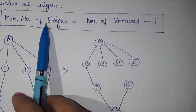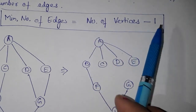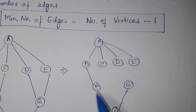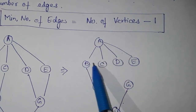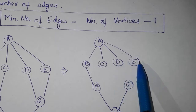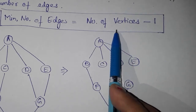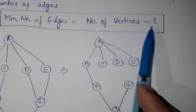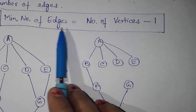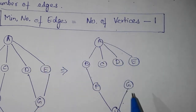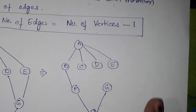The minimum number of edges equals the number of vertices minus 1. Here the total number of vertices are 8, so 8 minus 1 is 7. So the minimum number of edges are 7. This is a spanning tree.